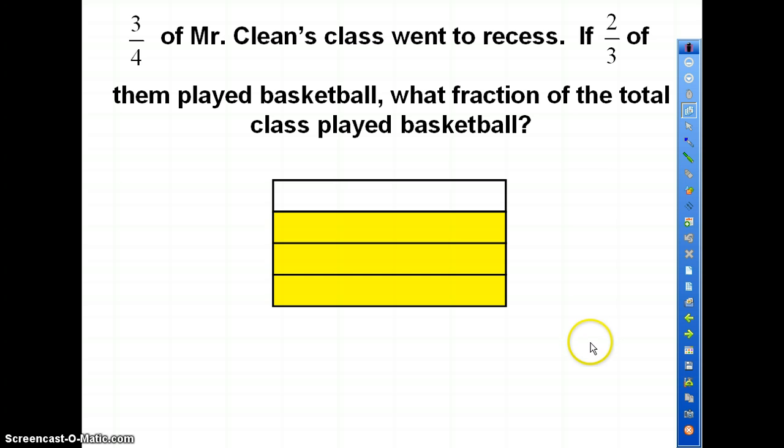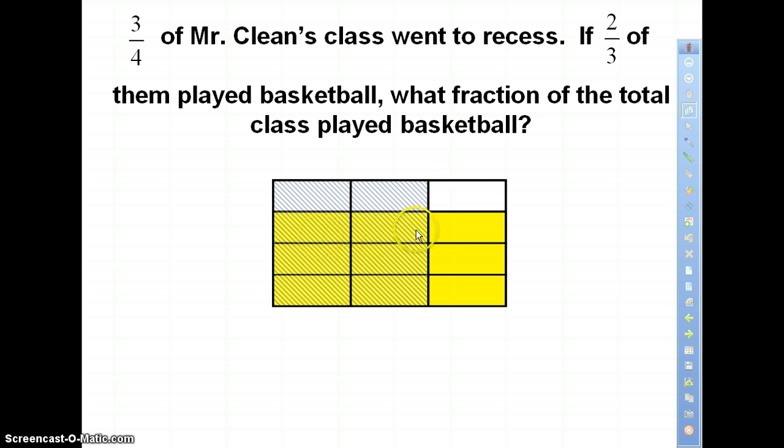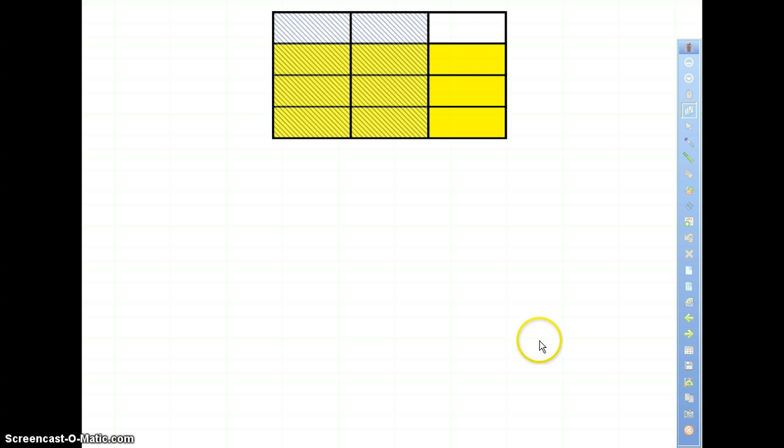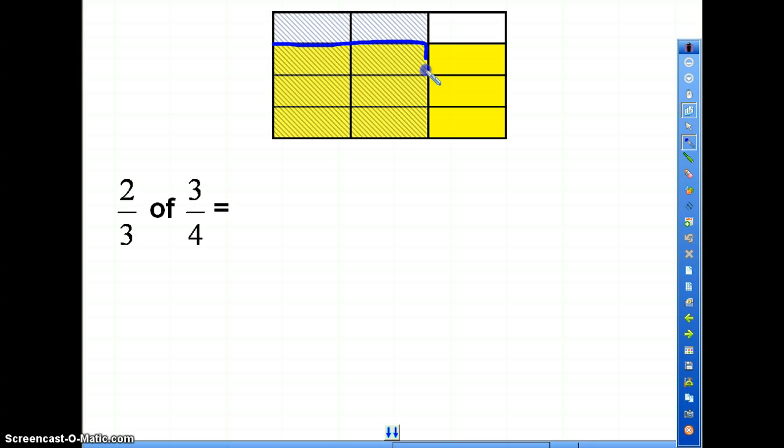The three-fourths I've shaded in yellow represents the fraction of the class that went to recess. Now, of those that went to recess, two-thirds of them played basketball. Let's divide the entire class into three equal pieces vertically and shade in two-thirds of that. How many equal pieces did I now divide the whole class into? I've got twelve equal pieces. Of the twelve equal pieces, how many of them played basketball? That's one, two, three, four, five, six—that is six twelfths.